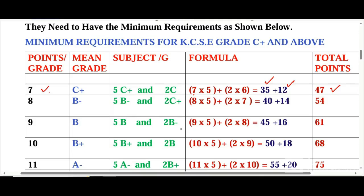If you want to get a B minus, you must have five B minuses and two C plus — nothing more, nothing less. B minus has eight points, so 8 times 5 equals 40. Then C plus is seven points: 7 times 2 equals 14. So you will have 54 points and you will have gotten a B minus.